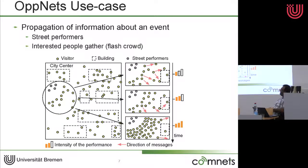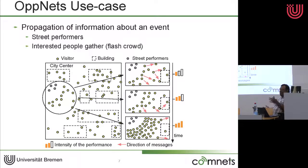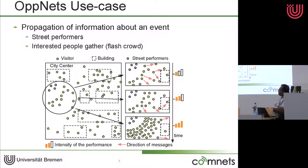Here is a scenario I drew from previous work: a street performer scenario. Say Coldplay decides to perform in the city. A few people gather around, and their devices propagate this information to others. Gradually those devices propagate further, and you see more people coming to the performance. At the end, you see a lot of people. This is how opportunistic networks work — one person likes information and it propagates to others. Some people may not like Coldplay, so they ignore it, but others want to come see the performance.